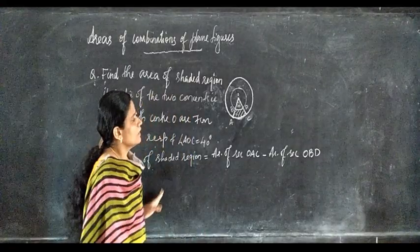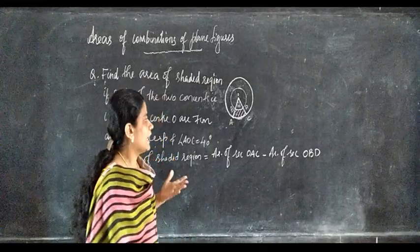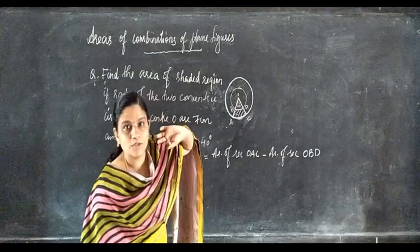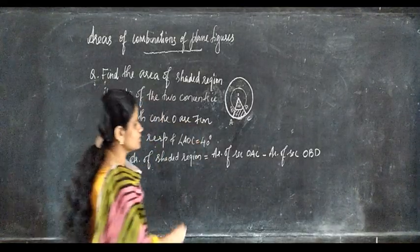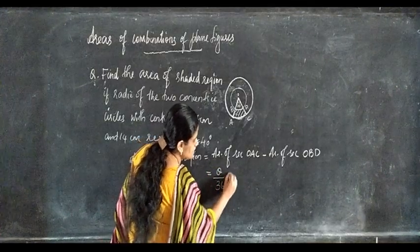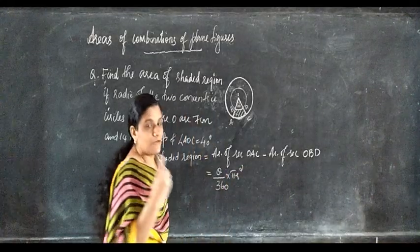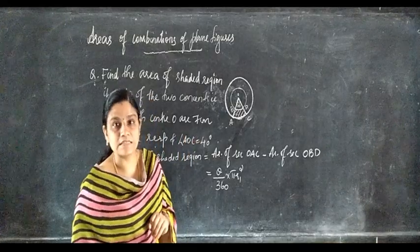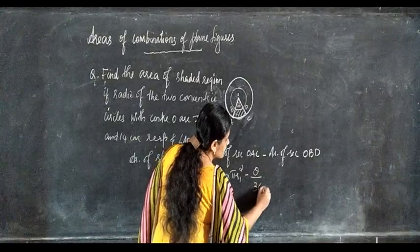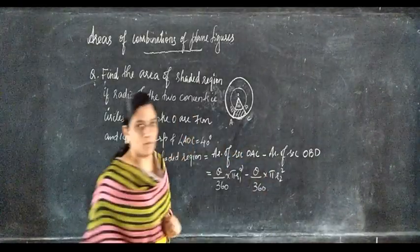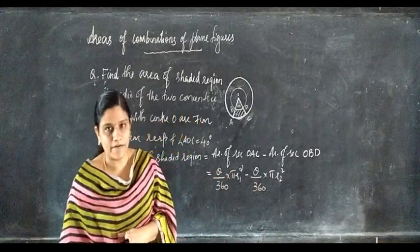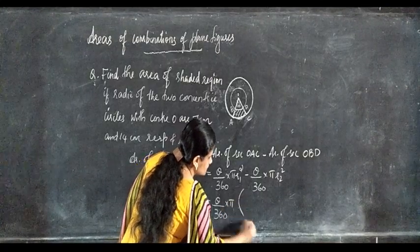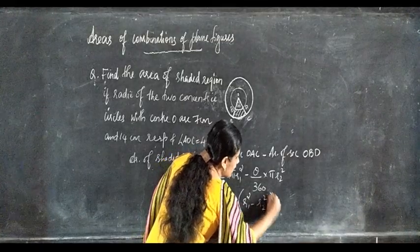Area of shaded region equals area of sector OAC minus area of sector OBD. Theta is 40 degrees. Since we have two radii, let us call them R1 and R2. Taking the common factor theta by 360 into π outside: area equals theta by 360 into π into open bracket R1 squared minus R2 squared close bracket.